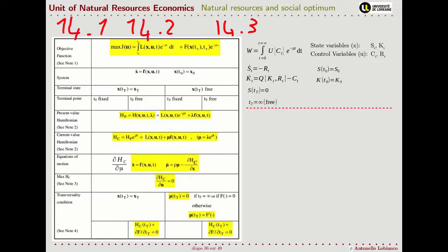So what does this table tell us? The general objective is to maximize a function subject to some control variables. In general, the function we want to optimize is the integral over a function that depends on our control variables, the state variables, and eventually on time t.